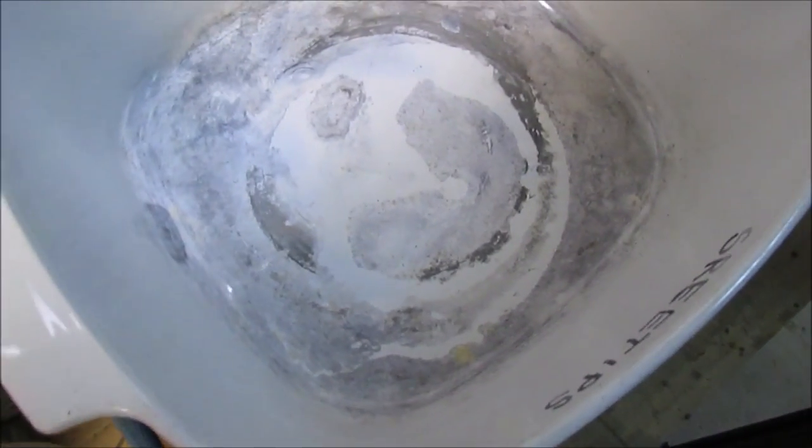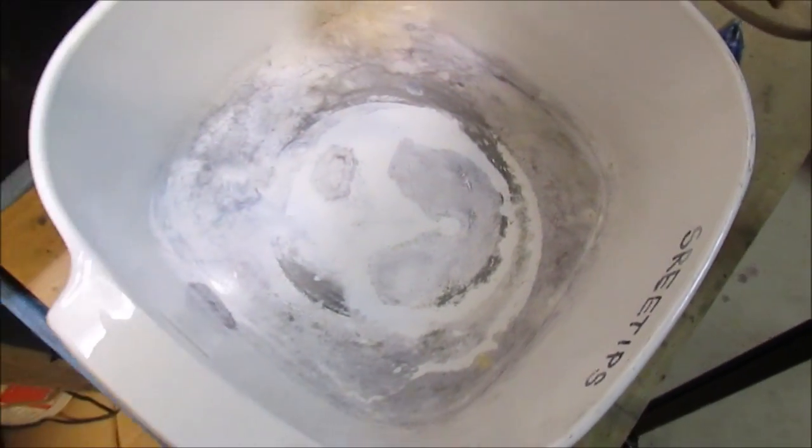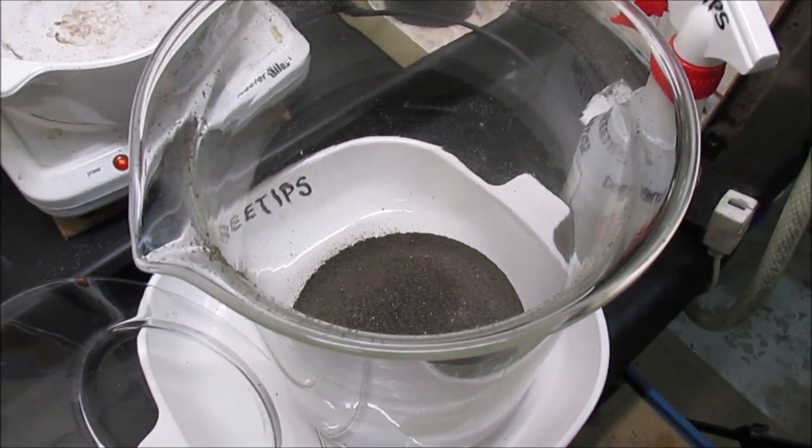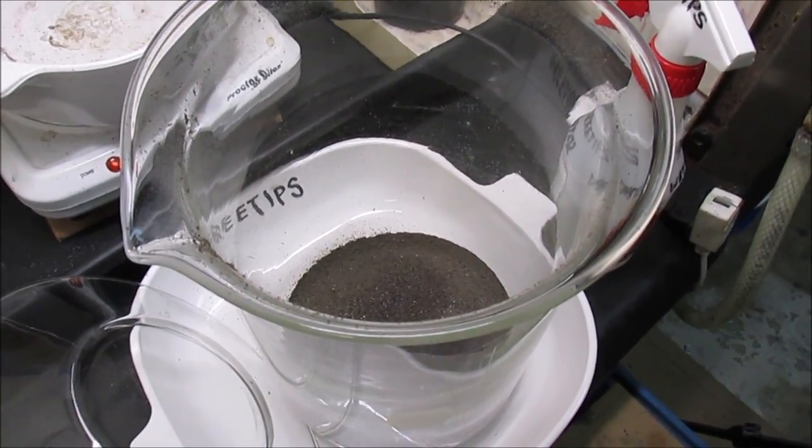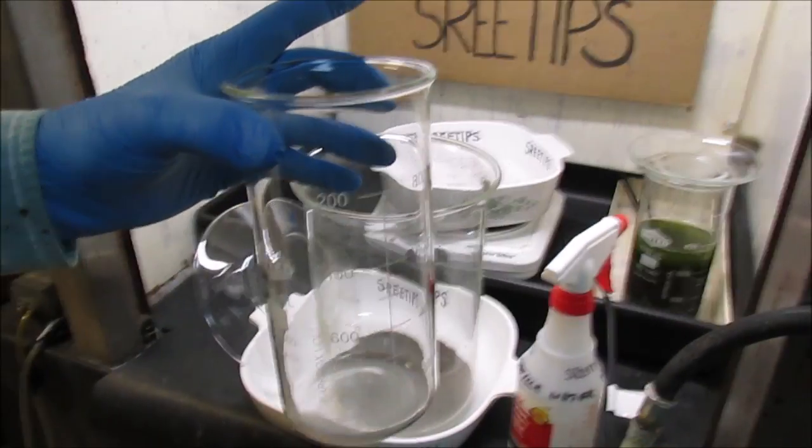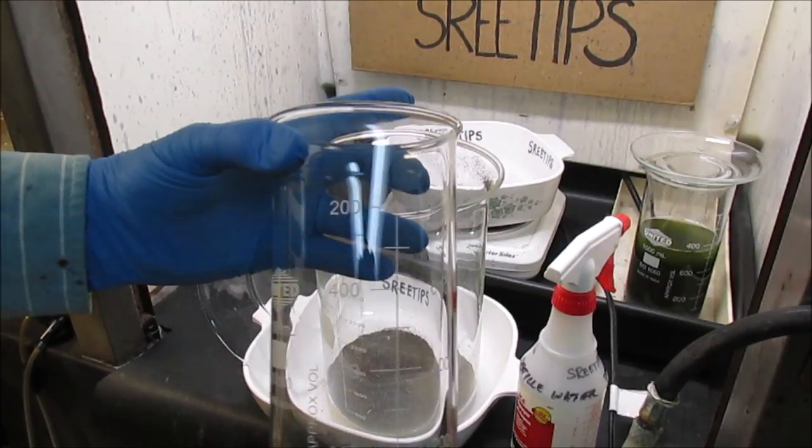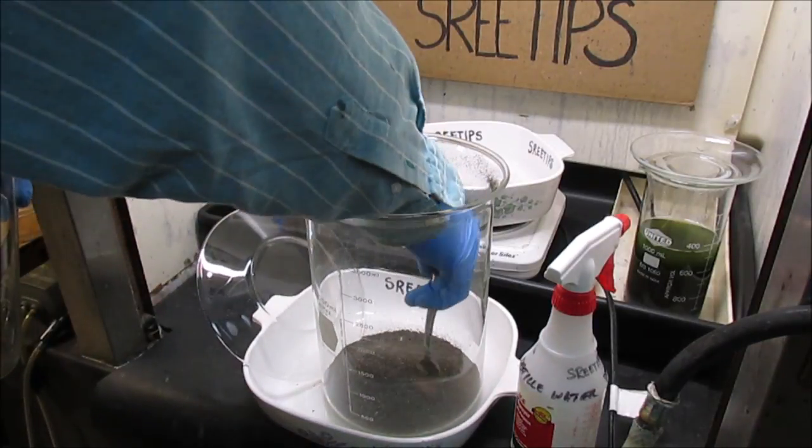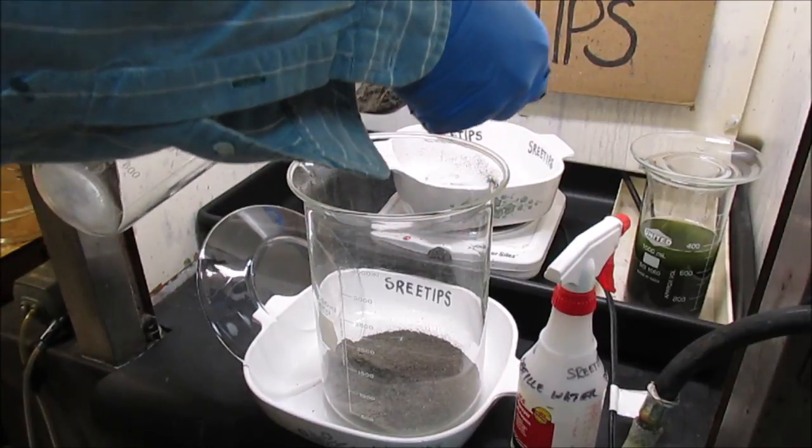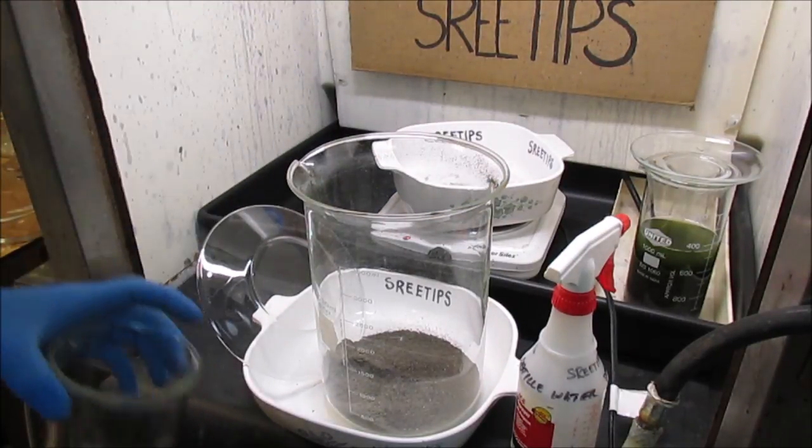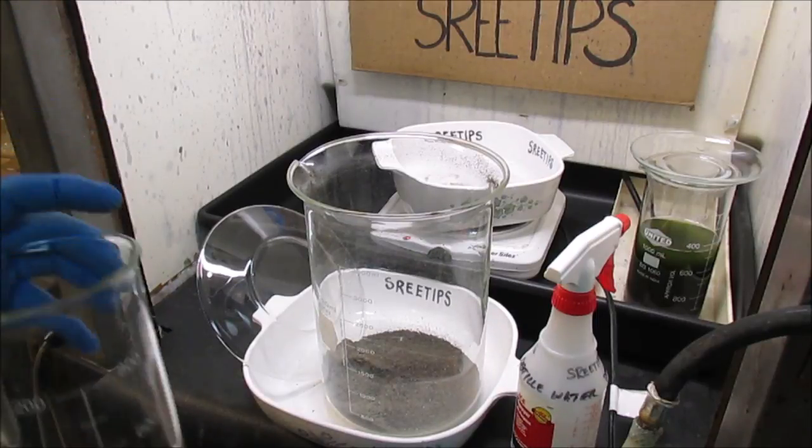I swept the contents of the pan into the strainer so it's nice and clean down here. We'll just set this off to the side and do some experiments with seeing about getting this ash processed for the metals. I'm going to put a tablespoon of this material in this tall one liter beaker here.